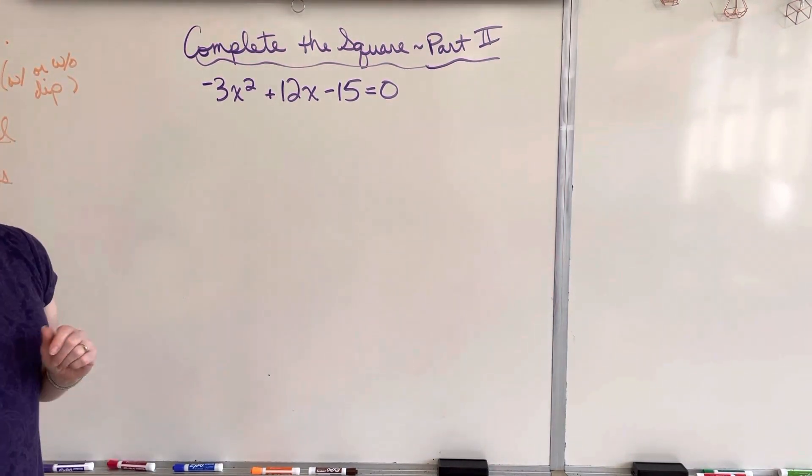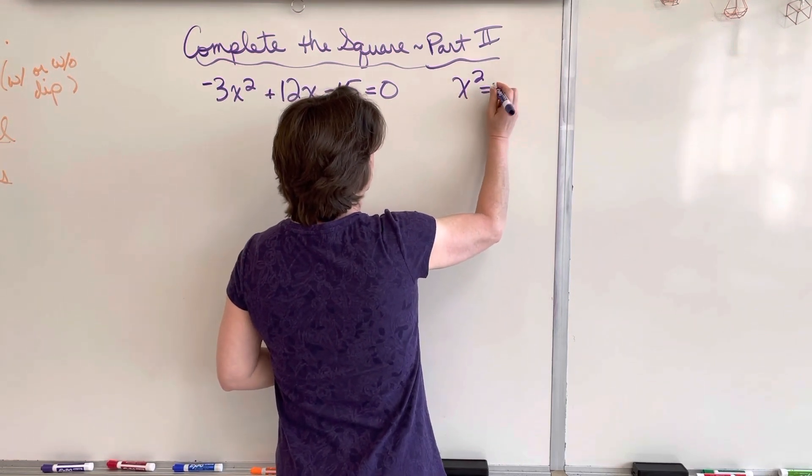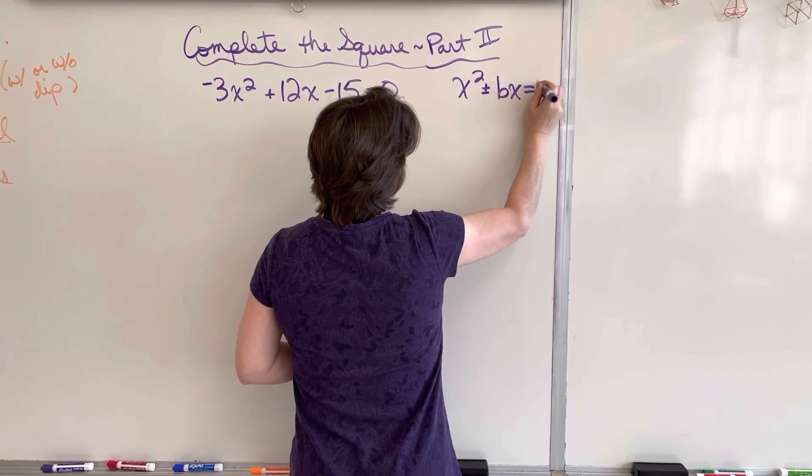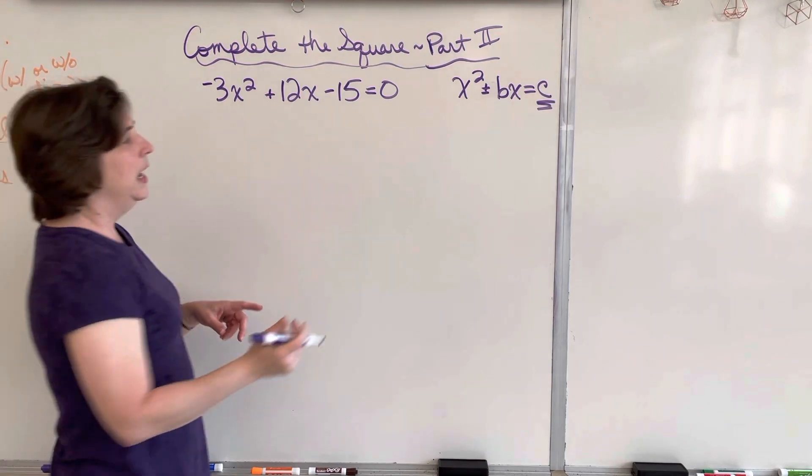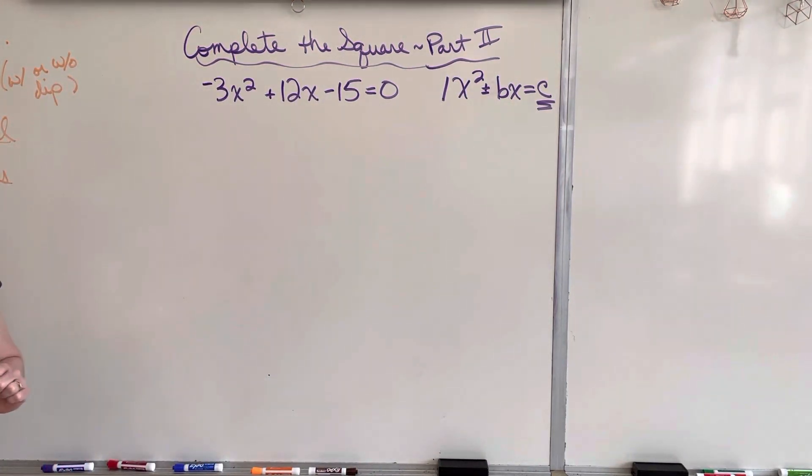When you're completing the square, you want to get it into the form x squared plus or minus bx equals c. We want the c on one side and everything else on the other side. Also, the coefficient from x squared needs to be a 1.